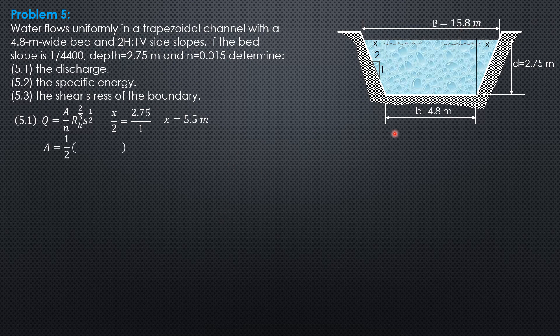So area, therefore, is 1 half of quantity 15.8 plus 4.8 times 2.75. It's 28.325 square meters.